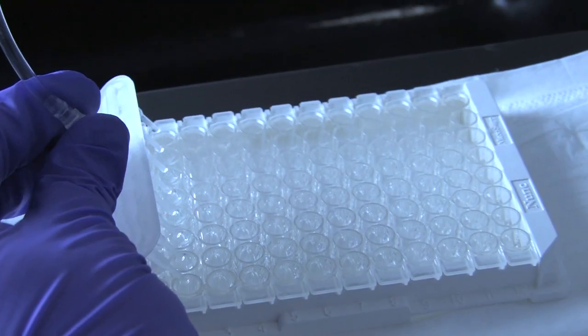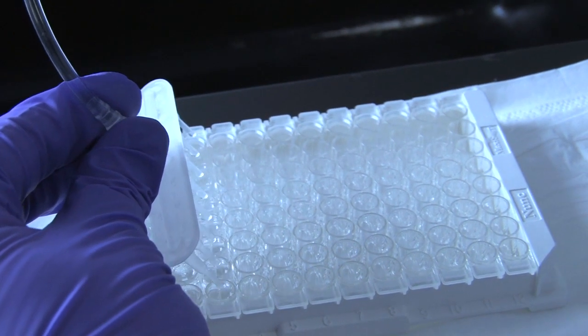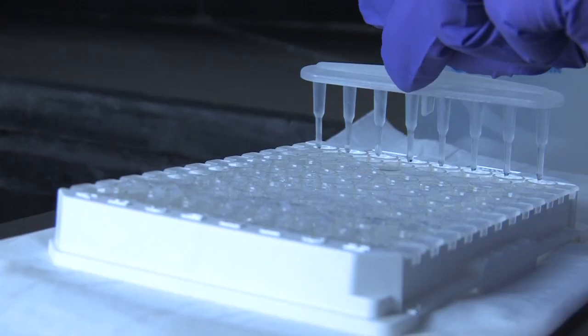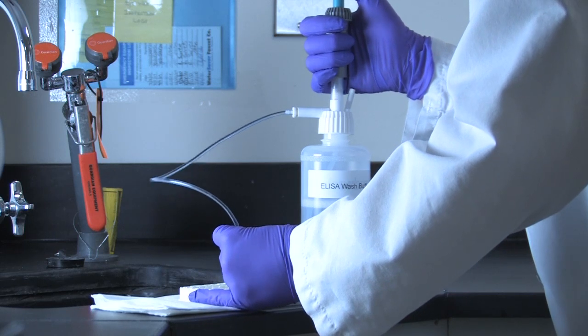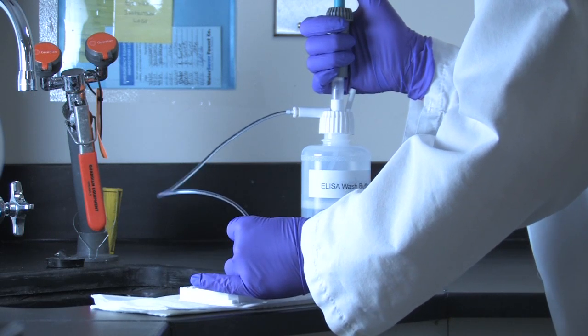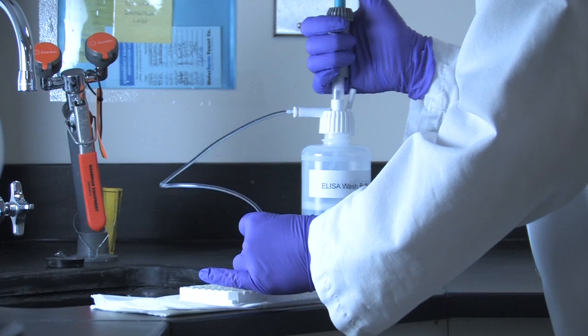Using the prepared wash bottle, fill the wells evenly across the plate with wash buffer. Working methodically, the liquid should be dispensed with force in order to properly agitate the contents and remove any unbound material.